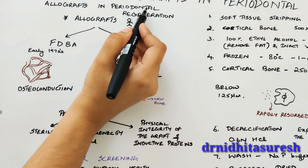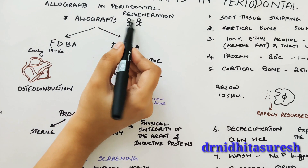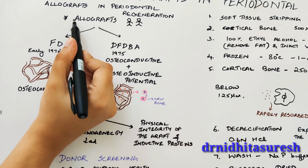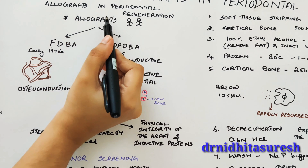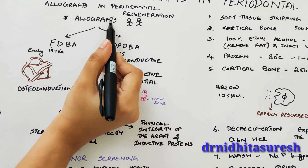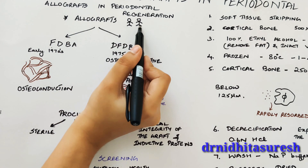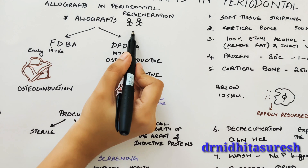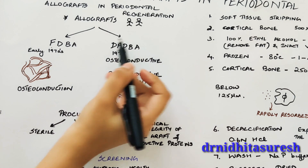Allografts in periodontal regeneration. Allografts are grafts obtained from different individuals of the same species.